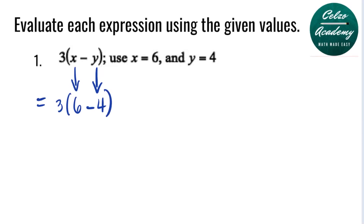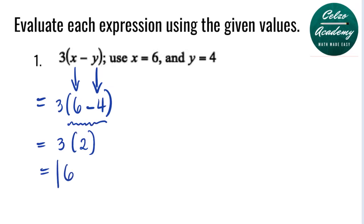In this numerical expression, the first thing we need to simplify is the grouping symbol: 6 minus 4, which is 2. So now we have 3 times 2, and the final answer is 6.